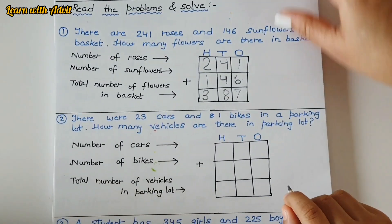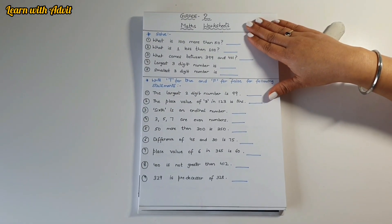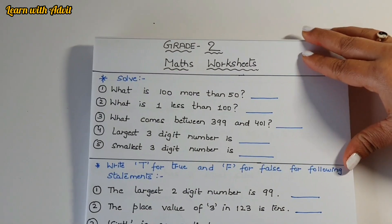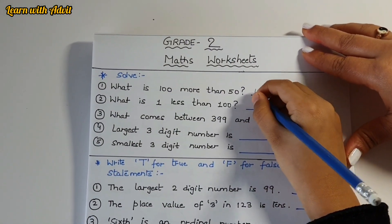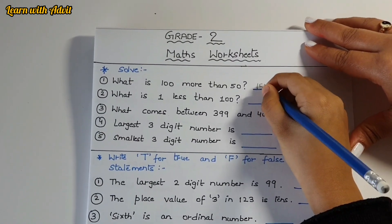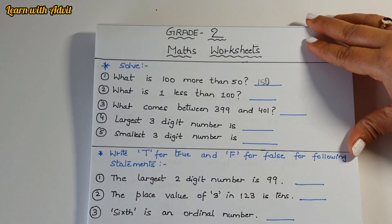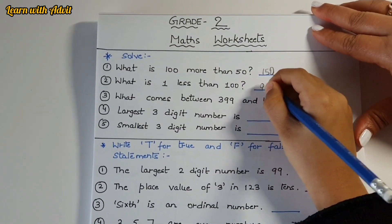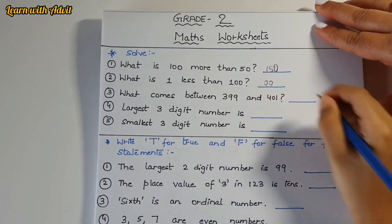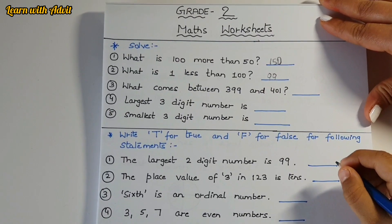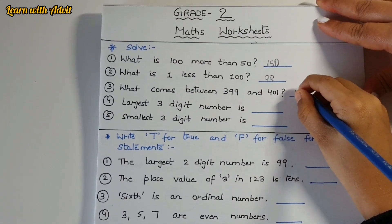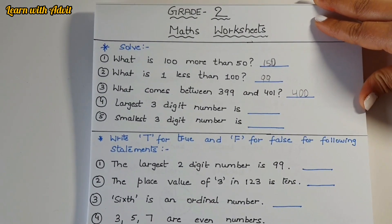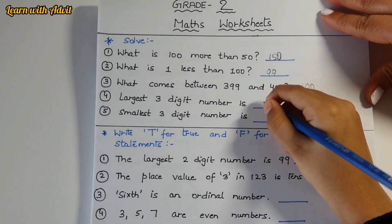Here are some questions you have to solve. What is hundred more than 50? What is one less than hundred? What comes between 399 and 401? Good job.